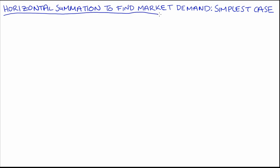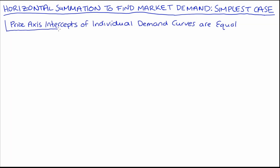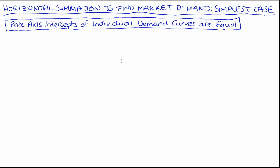Hi everyone. In this video I'm going to be going through the simplest sort of case that you will find when we're horizontally summating individual demand to find market demand. And that will be when the price axis intercepts of our individual consumers' individual demand curves are equal to one another. It's a good case to go through as a starting point if you're being introduced to the idea of horizontal summation and finding market demand.